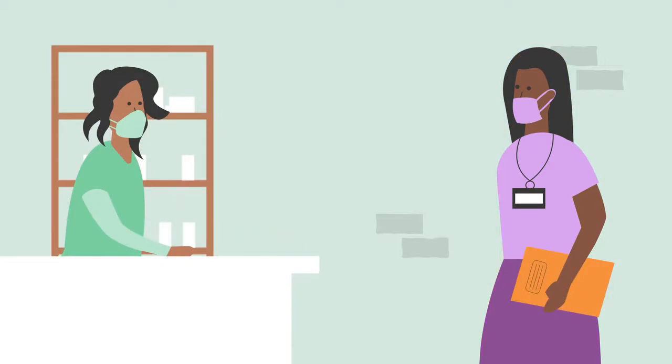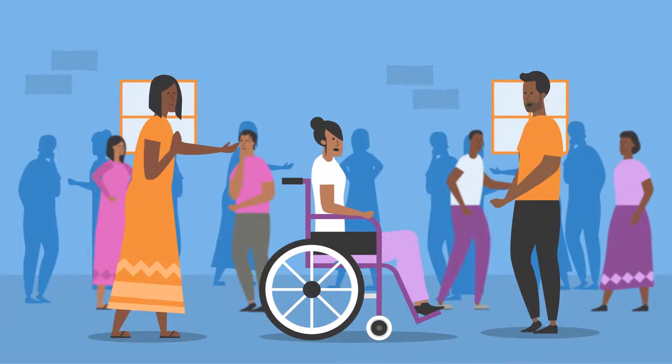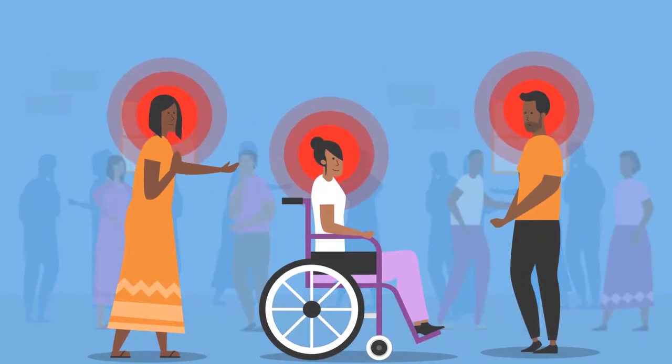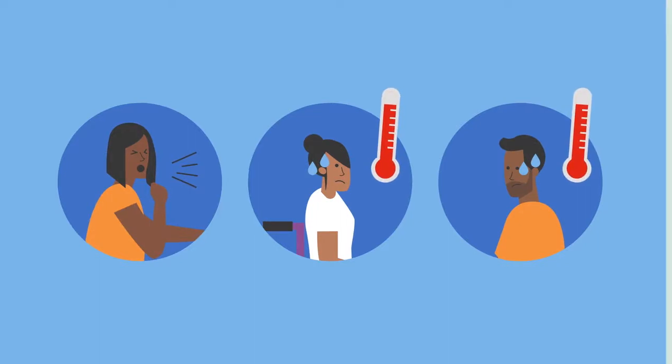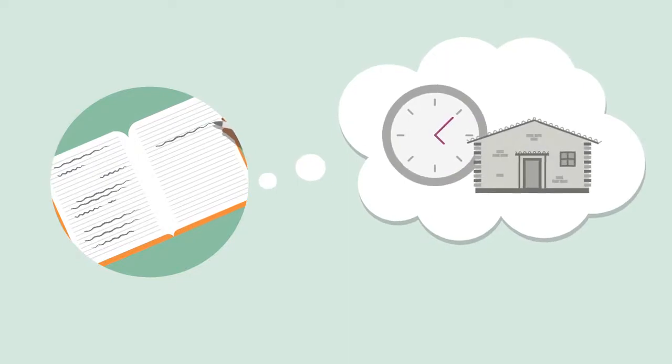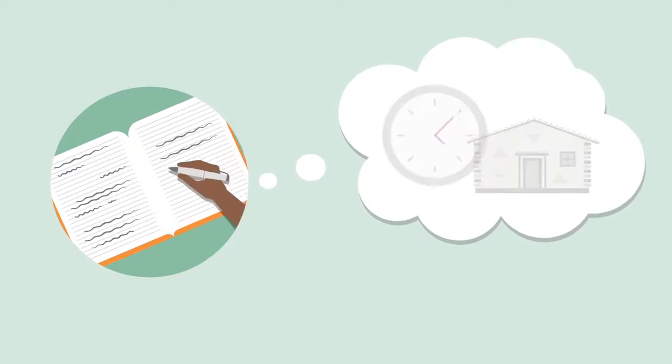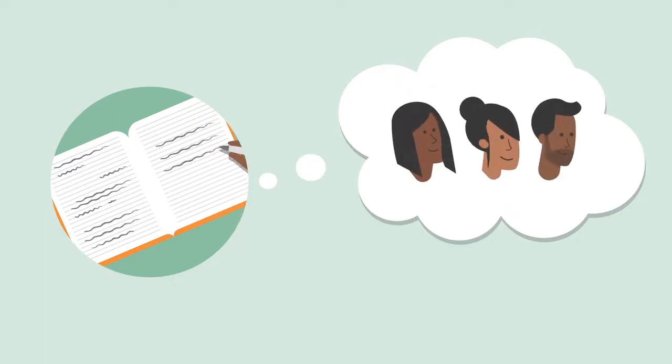A local pharmacist tells Mary about a social gathering in a nearby village where 15 people were together in one house. Afterwards, some of the people developed fevers and coughs. Mary writes down the time and place and any other information she knows about the gathering, such as who attended and what symptoms they have.